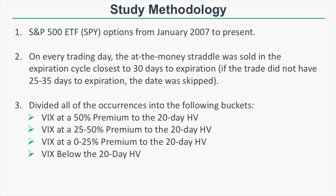We divided all occurrences into four buckets: entries when the VIX was at a 50%+ premium to SPY's one-month historical volatility; when the VIX was at a 25–50% premium; when the VIX was at a 0–25% premium to the 20-day historical volatility; and when the VIX index was below the one-month historical volatility. We then compared all short straddles in each bucket to find patterns.